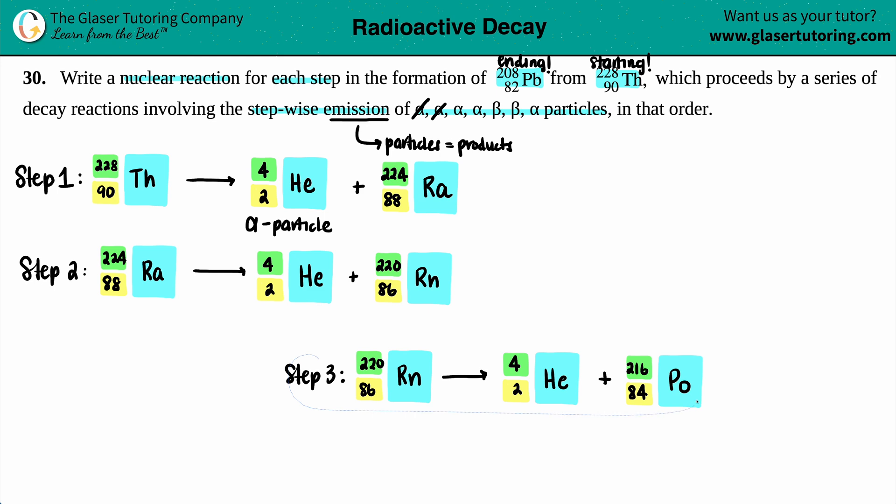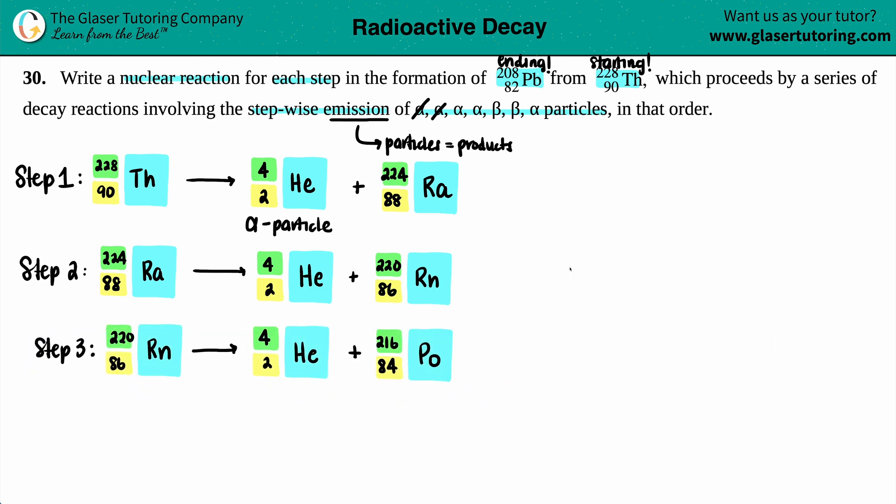We are moving. Step three is done. Next one is step four. This alpha is gone, we now need another alpha. Pick up where you left off: polonium, Po-216, 84 yields the alpha, so the helium, 2 on the bottom, 4 up on the top.